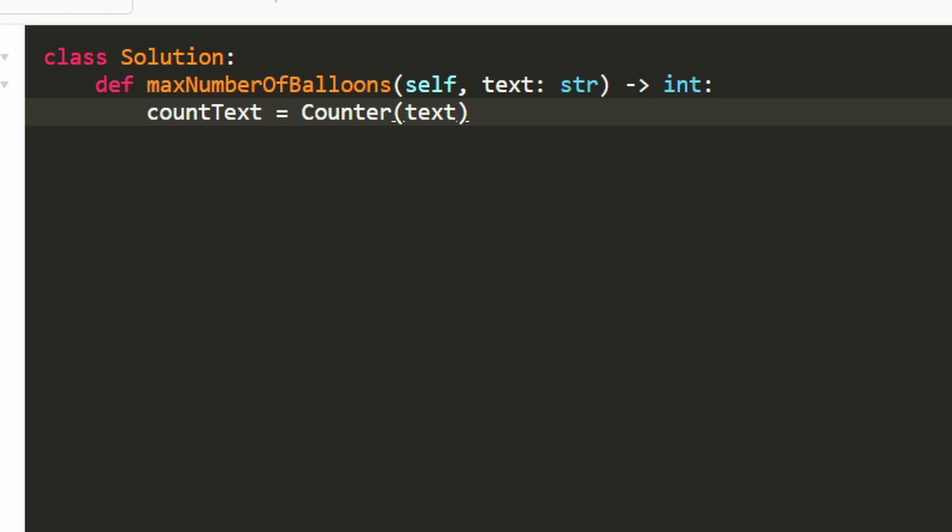If our interviewer really wanted us to write out the code to do this, of course, we could do that. But maybe to save time, it's always nice to ask your interviewer if they're fine with you using some built-in function. So this is just a, so count text is just a hash map counting each character. Let's do the same for balloon. And I'm just going to call it balloon. It's feeding into this function. We're just going to pass in the string balloon itself. Again, we could hard code a hash map or we could write a for loop to go through each character, but this is just a little faster.